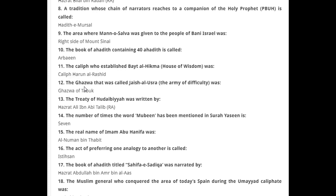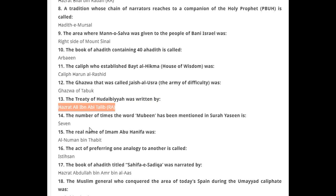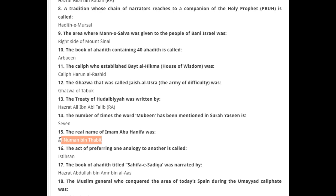The Ghazwa that was called 'Jaish al-Usrah' (the army of difficulty) was the Ghazwa of Tabuk. The Treaty of Hudaybiyyah was written by Hazrat Ali ibn Abi Talib (R.A.). The number of times the word 'Mubeen' has been mentioned in Surah Yasin is seven. The real name of Imam Abu Hanifa was Al-Numan bin Thabit. The act of preferring one analogy to another is called Istihsan.